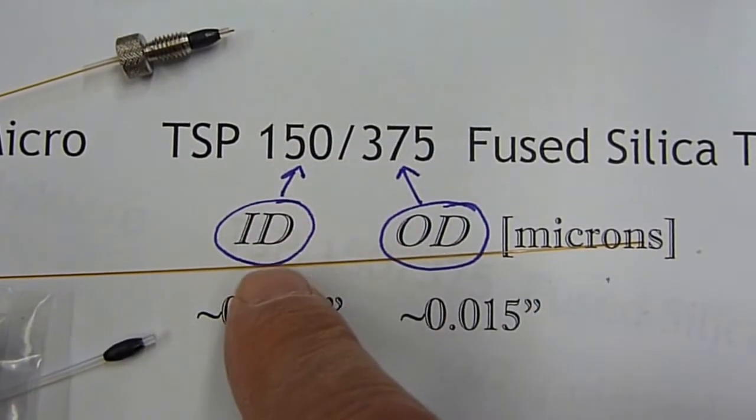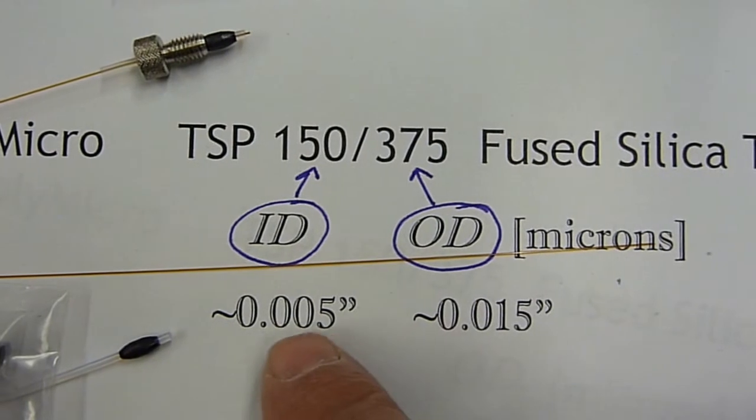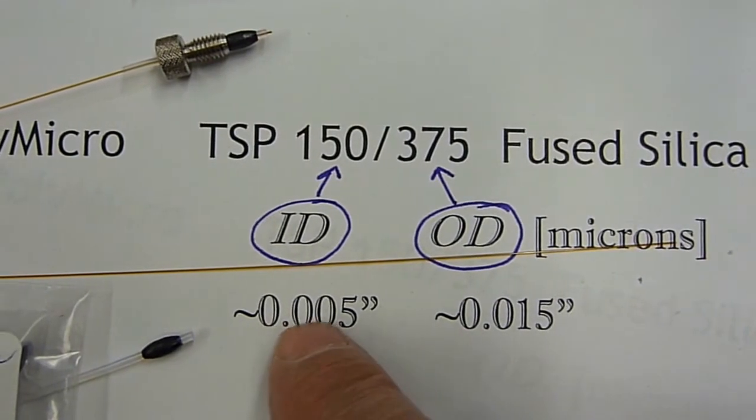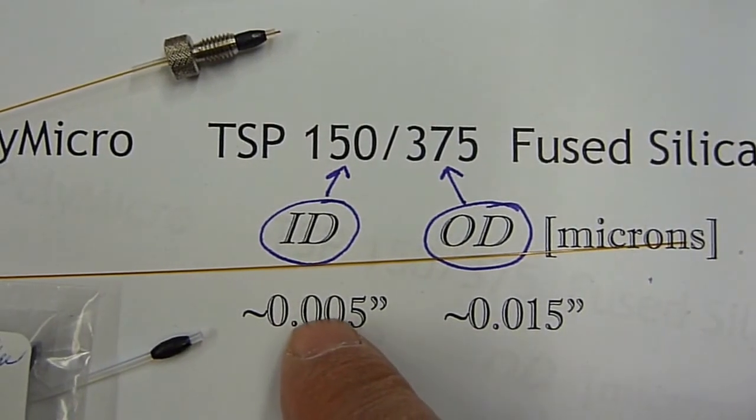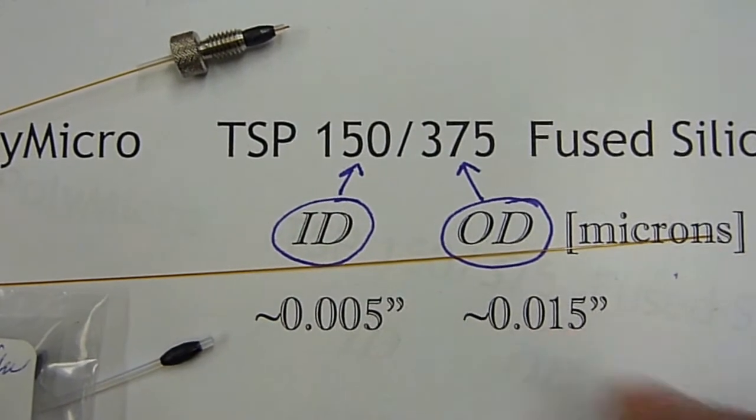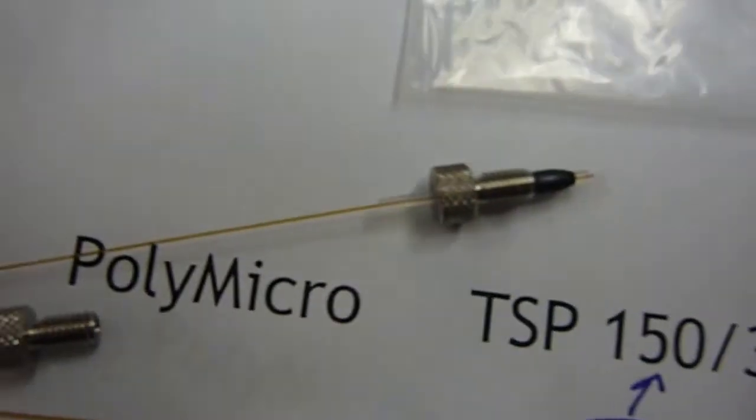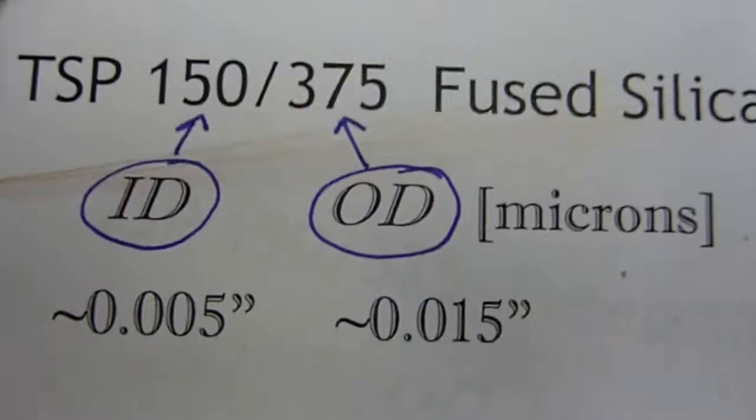The 150 refers to the ID in microns. And so if you're in the English system, it's about 5 thousandths of an inch ID, 15 thousandths of an inch OD. And so brown stuff is the tubing. So this is the tubing.